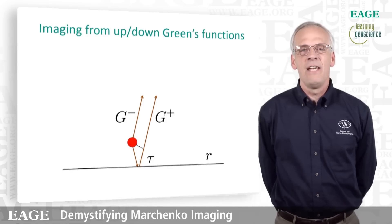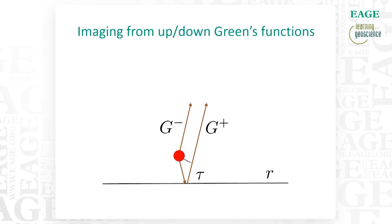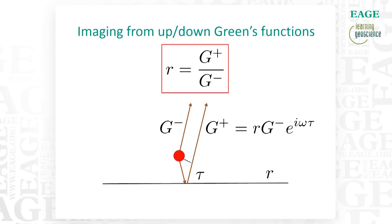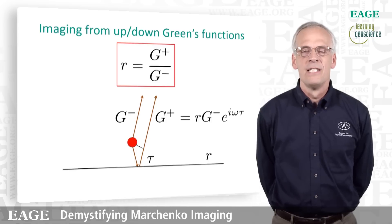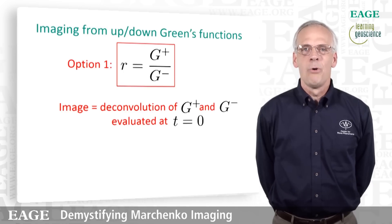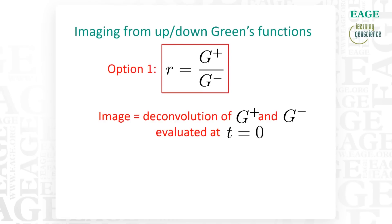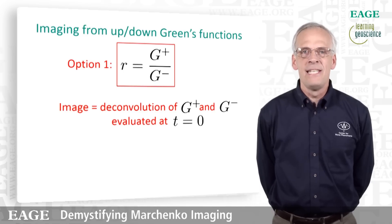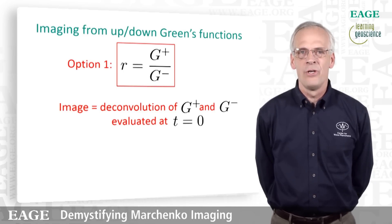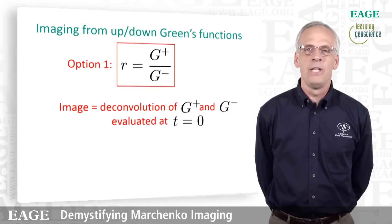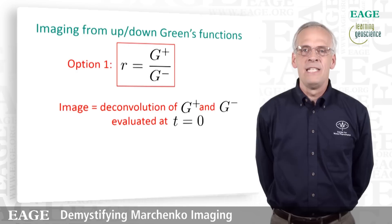Here's the simplest imaging option. I have a target point just above a reflector with reflection coefficient R. The upward-going Green's function is related to the downward-going Green's function by the reflectivity coefficient and a phase term accounting for wave propagation from the target point to the reflection point. When the target point lies at the reflector, the phase term goes away, and the reflection coefficient is just the ratio of the upward and downward components of the Green's function. More precisely, the image is a deconvolution of the upward and downward components of the Green's function evaluated at t equals zero.